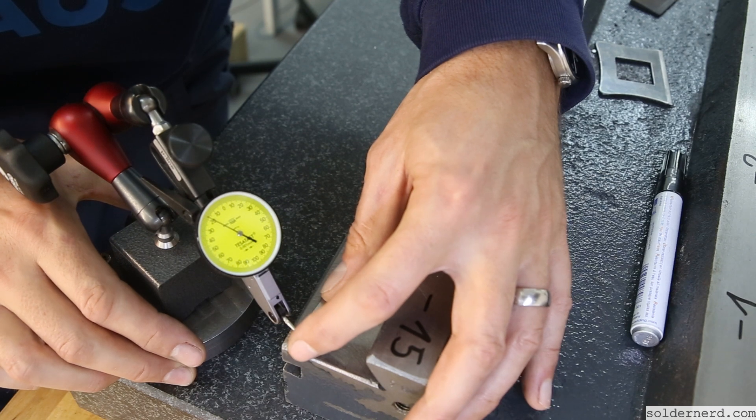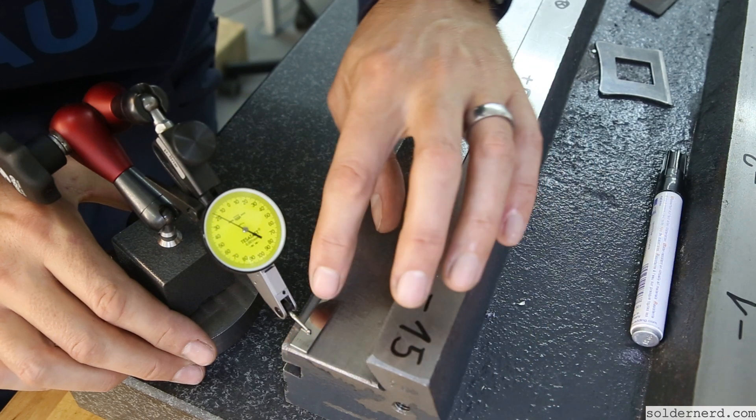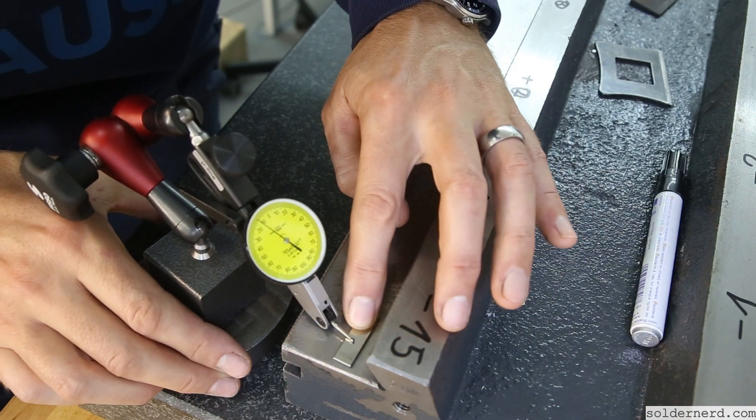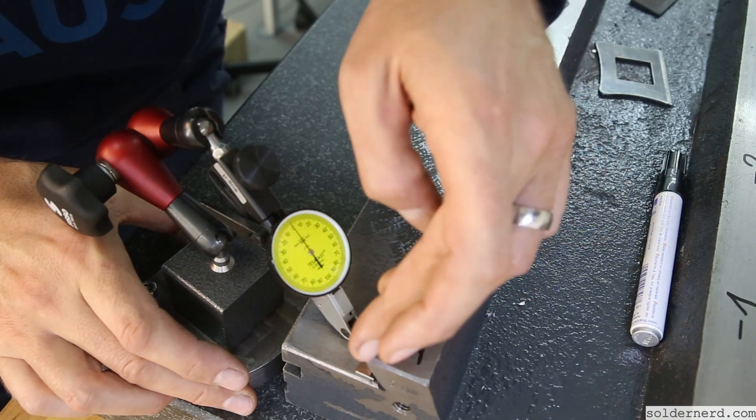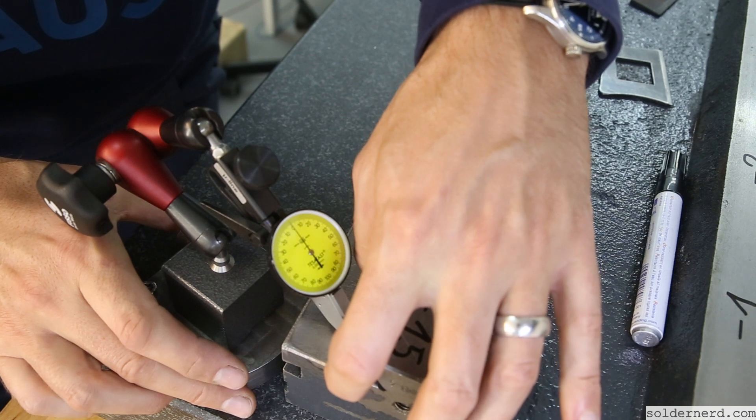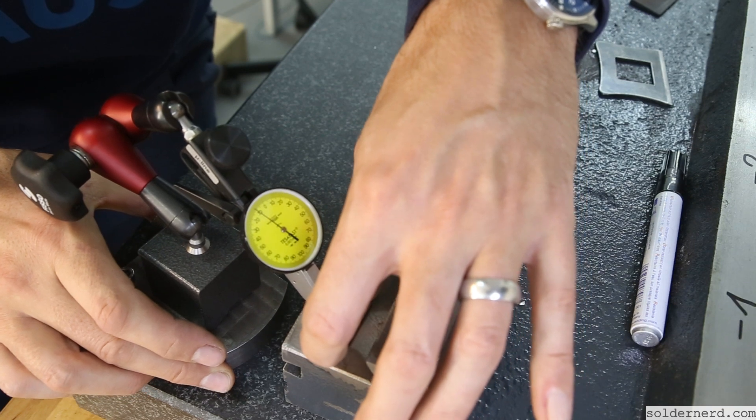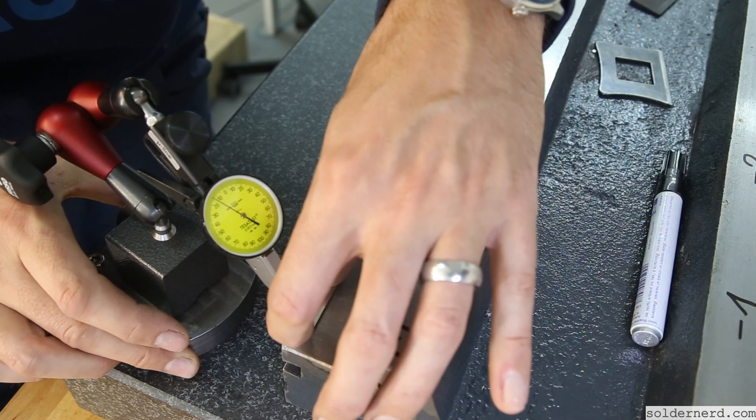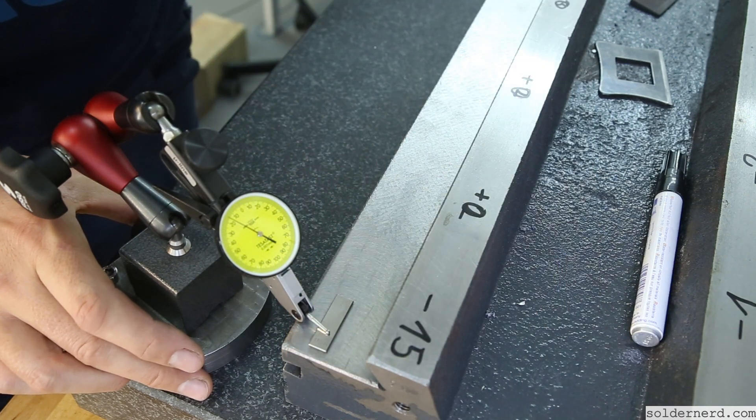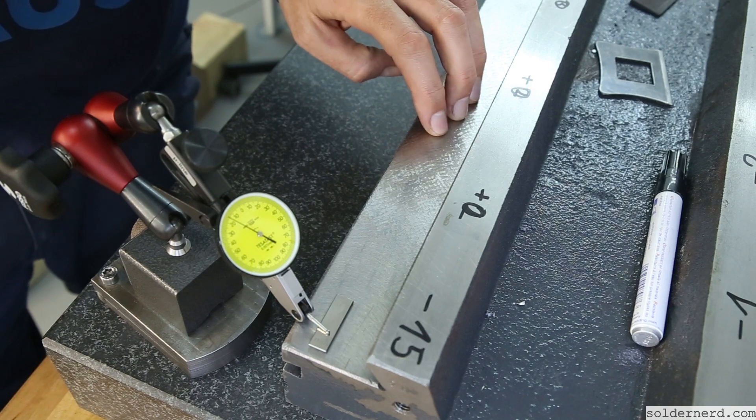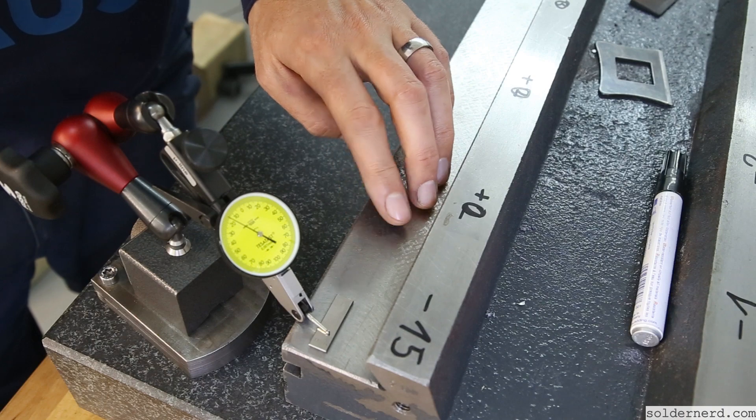Down here in this extreme corner we're down at minus 18 micron. It gets better towards the back. Here at the back in the very back it is scraped and that's where it reads zero, but as soon as I move a bit to the front here it gets worse and worse. So this corner here is super low compared to the rest of the surface and that's why I have to keep scraping on this till I get another 20 or so micron off.